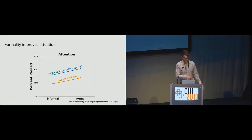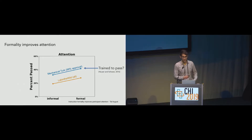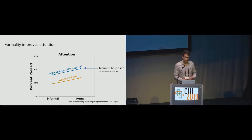We attribute the reason Mechanical Turk participants passed the attention check more often than Lab in the Wild participants to the fact that paid crowd workers often have to deal with identifying and passing attention checks, and prior work shows this may train them to identify and pass them better. Since we only used Mechanical Turk participants with a 99% approval rating or higher, these were probably the ones who got really good at identifying and passing these attention checks. This is also supported by the fact that Lab in the Wild participants actually scored higher on average than Mechanical Turk participants, suggesting they were investing effort into the study even if not necessarily passing the attention check.